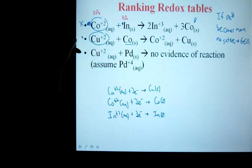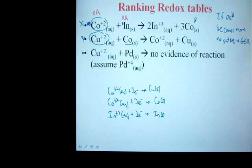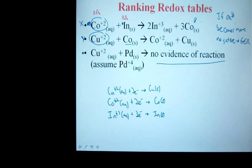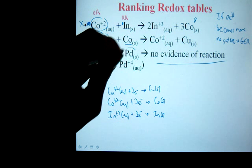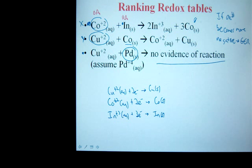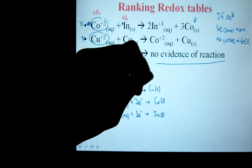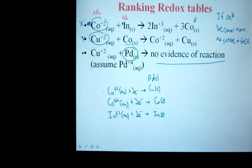Now the last reaction. We have copper two oxidizing agent and the palladium reducing agent. But this time there is no evidence of reaction, it's non-spontaneous. So what does that mean? That means the reducing agent, in this case palladium, must be above the oxidizing agent. Which means palladium is above copper. I already have copper in place right here. So that means the palladium must be above it.